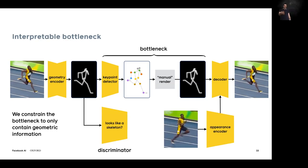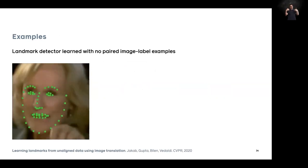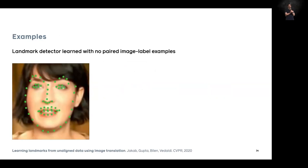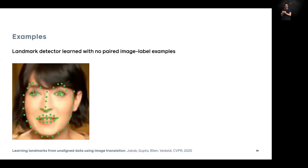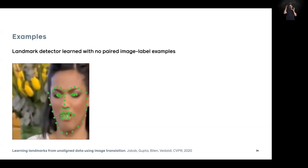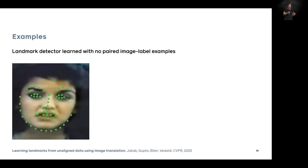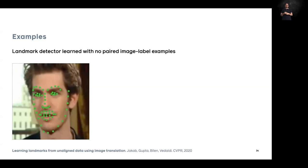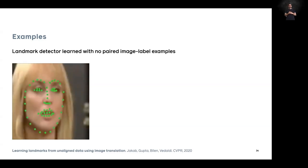Applied to faces, the skeleton is represented as 2D facial landmarks. The system was trained on videos with no corresponding landmark labels — a case of unsupervised, unpaired learning. Nevertheless, the method aligns landmarks to video frames surprisingly well.